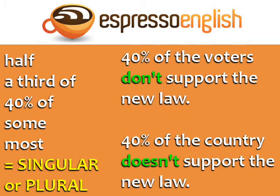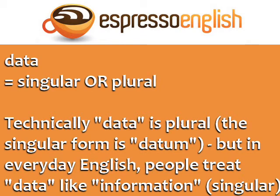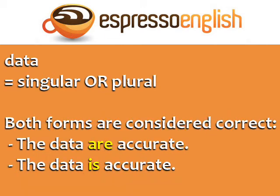One more example: '40% of the voters don't support the new law.' And '40% of the country doesn't support the new law' — 'doesn't' is the singular form because 'country' is also singular. One final tip about the word 'data': data can be singular or plural. Technically, data is plural — the singular form is 'datum' — but in everyday English, people treat 'data' like 'information,' which is singular. So both forms are considered correct: 'the data are accurate' and 'the data is accurate.'